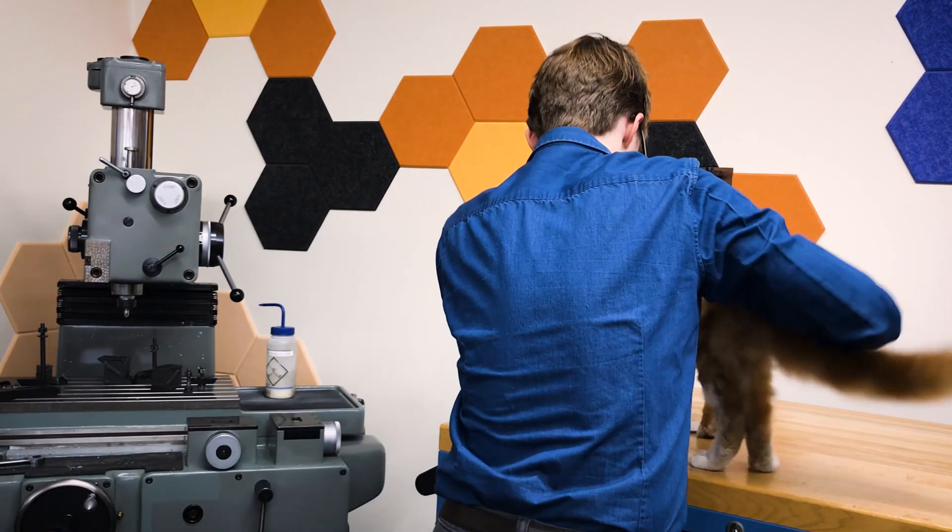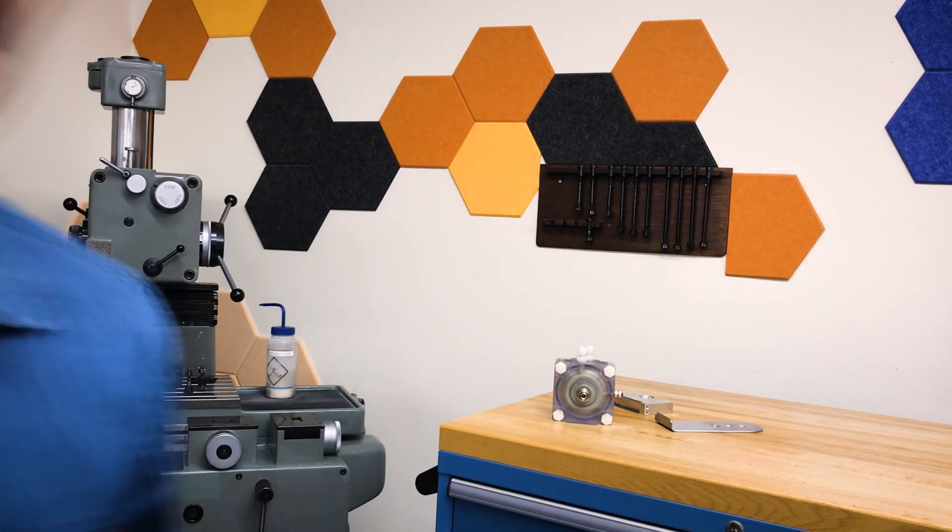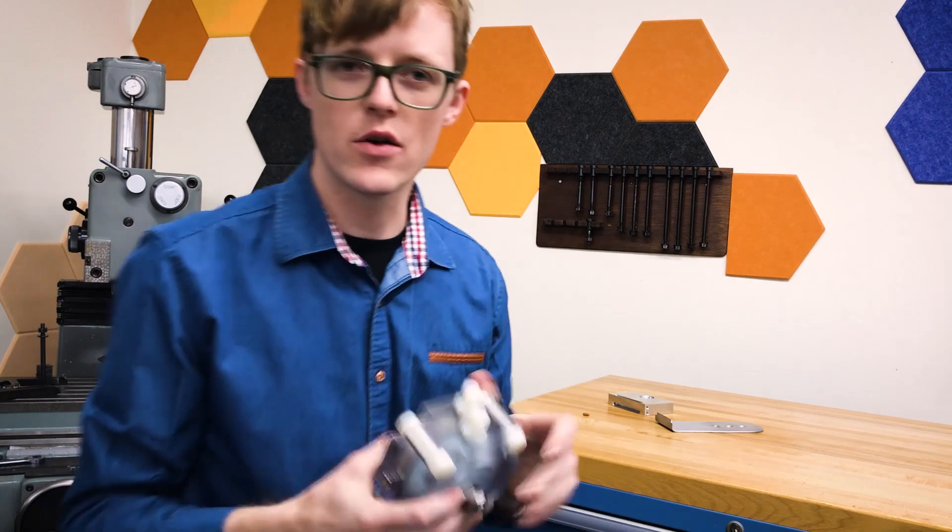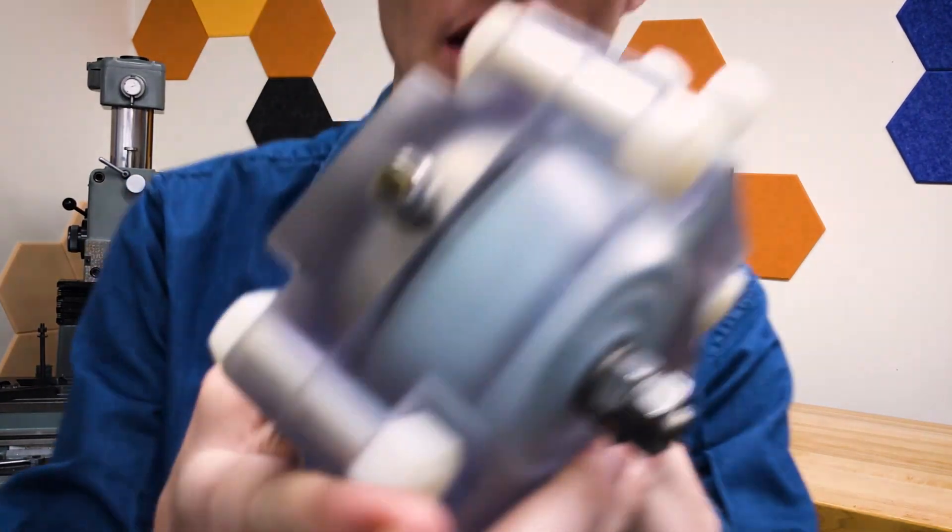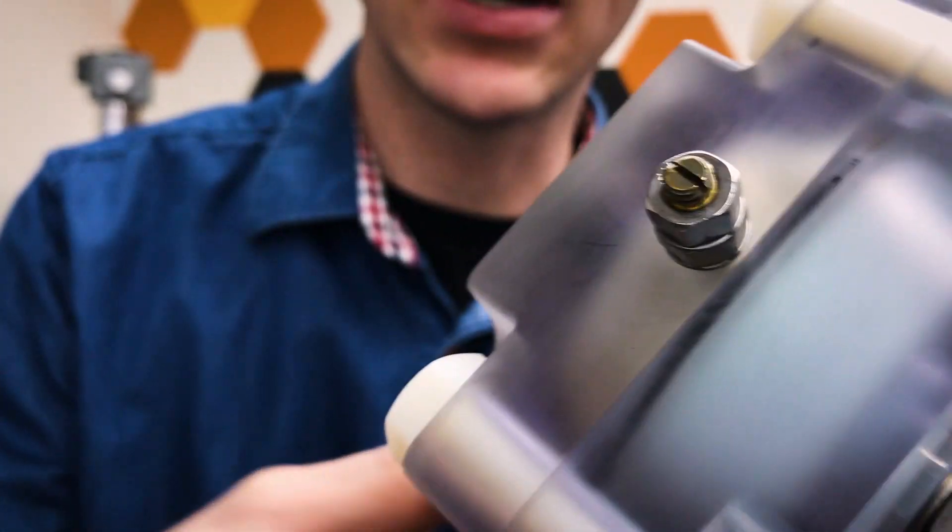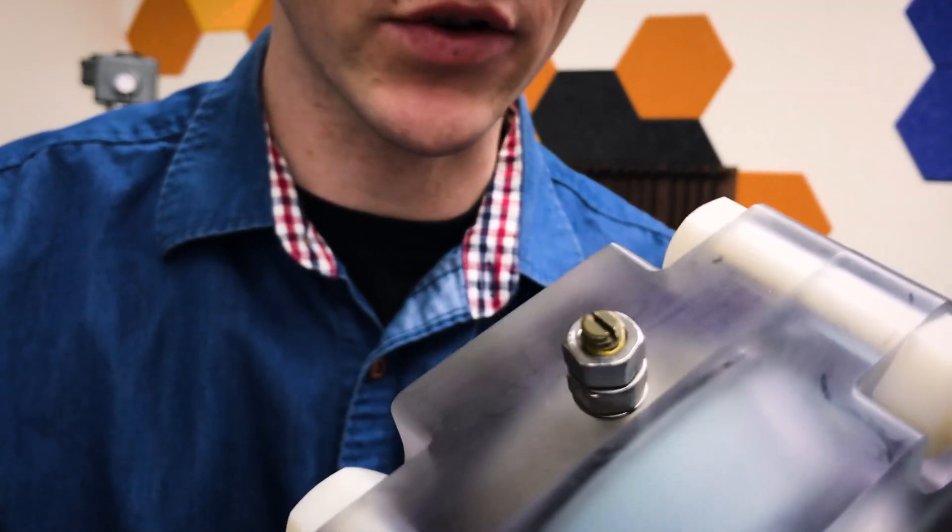Okay, no cats in the spark gap assembly area. Today I'm going to show you guys how to hook up a triggered spark gap. You can see here are the main electrodes - that's where the juice flows - and here is the trigger terminal. So we're going to go through those electrical connections.